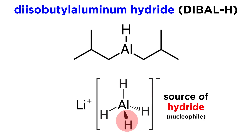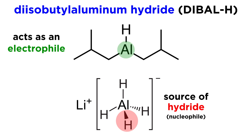The main difference in the mechanism of reduction is that lithium aluminum hydride is a source of hydride which acts as a nucleophile, immediately attacking the carbonyl. By contrast, diisobutyl aluminum hydride actually acts as an electrophile due to the ability of the aluminum atom to act as a Lewis acid prior to delivering the hydride.